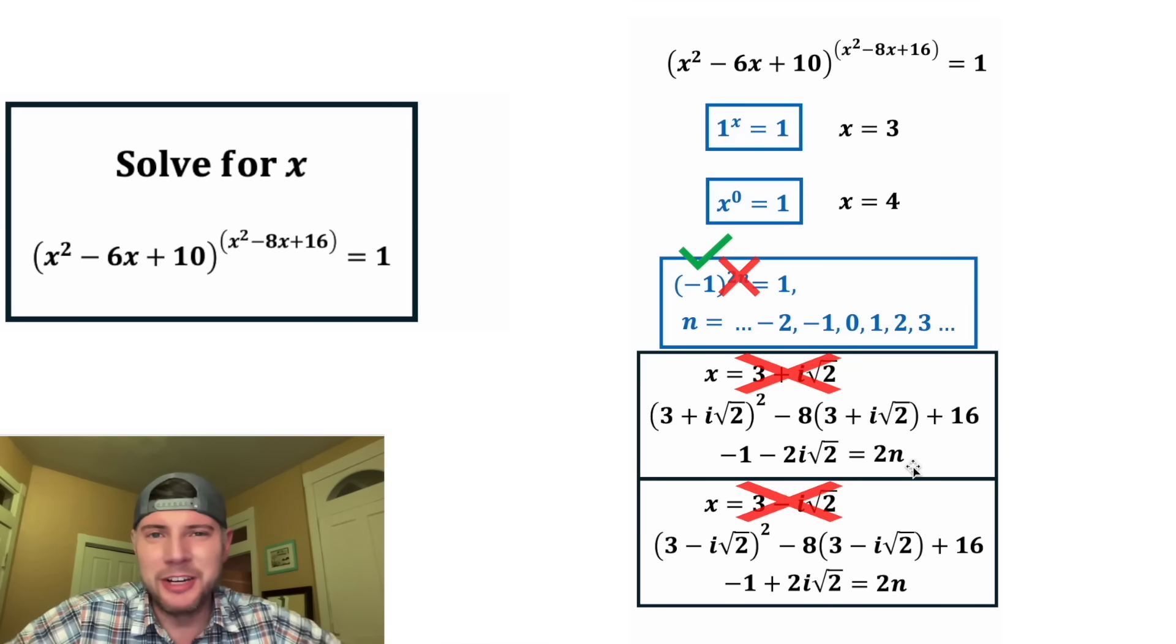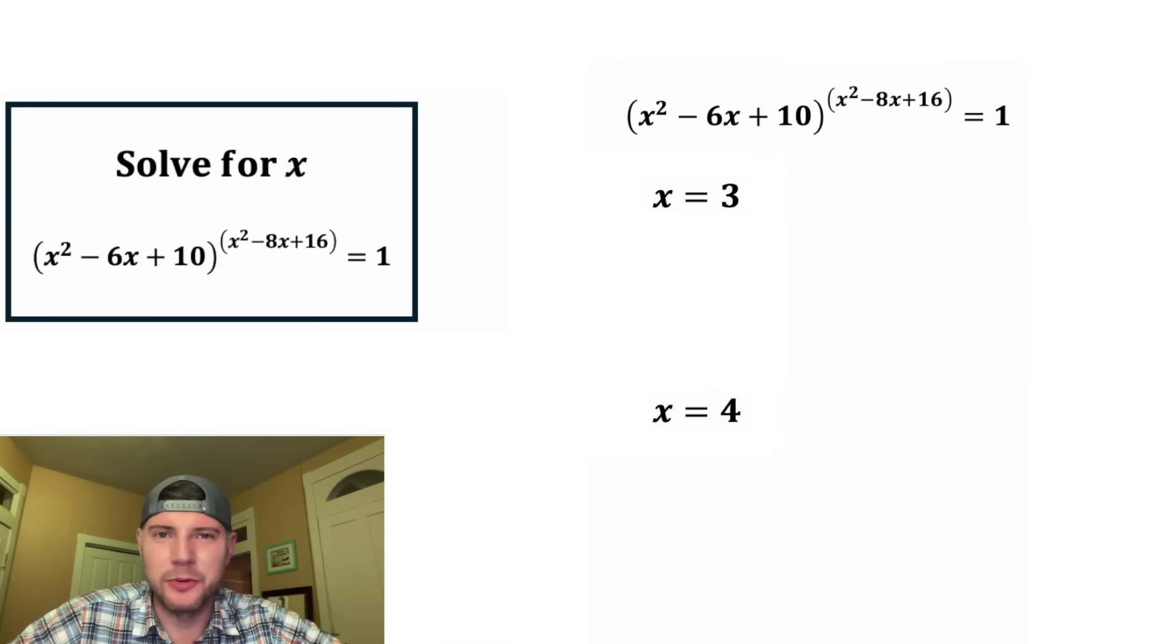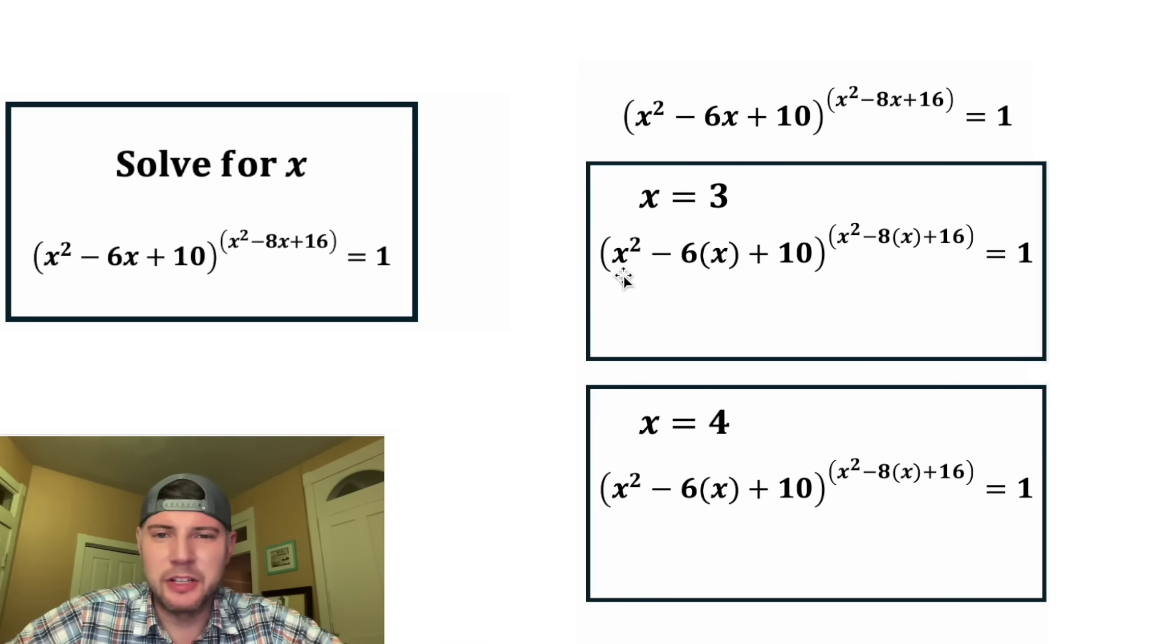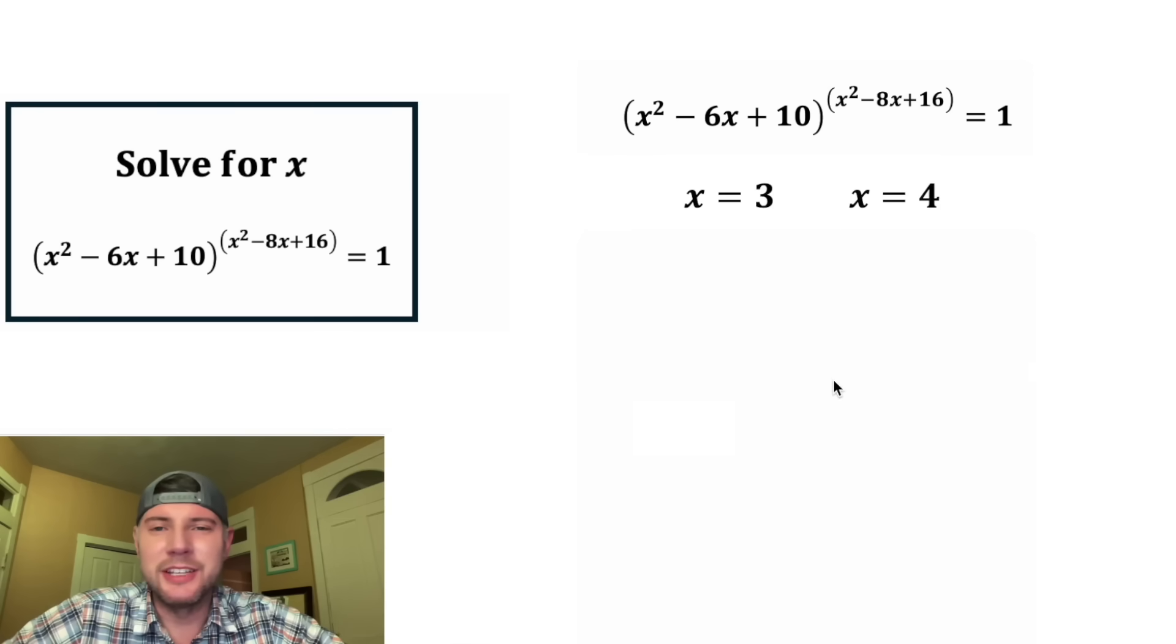I'm a little disappointed. I think it would have been a cooler problem if these would have worked. So now we're left with x equals 3 and x equals 4. Let's check them real quick. For x equals 3, let's plug in 3 for all the x's. And then for x equals 4, let's plug in 4 for all the x's. This ends up giving us 1 to the 1, which does equal 1, so it checks out. And this ends up giving us 2 to the 0, which does equal 1, so it checks out. So the answer to our question is x equals 3 or x equals 4. This looks important. Let's put a box around it.